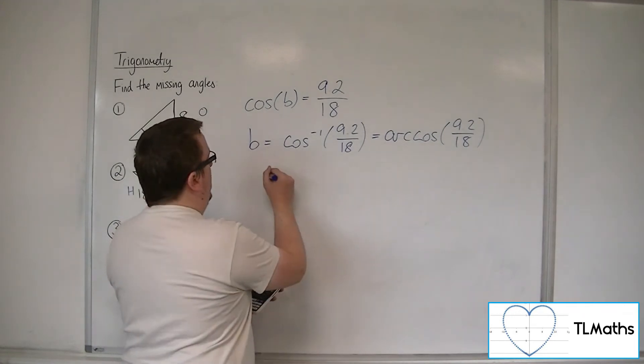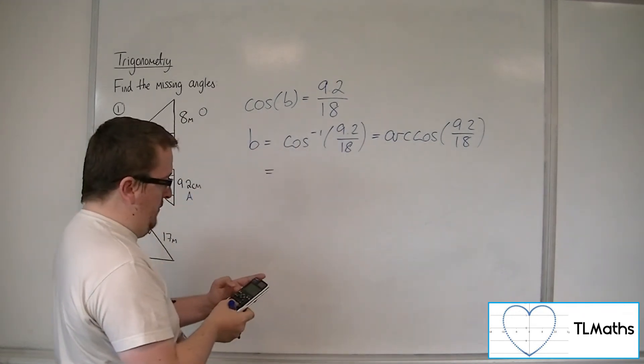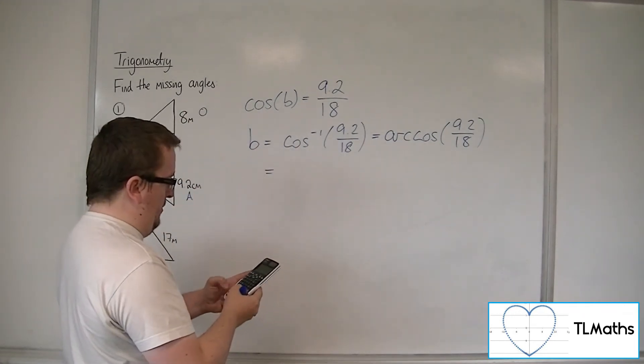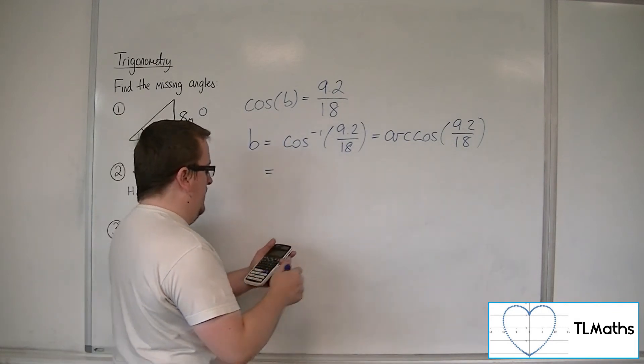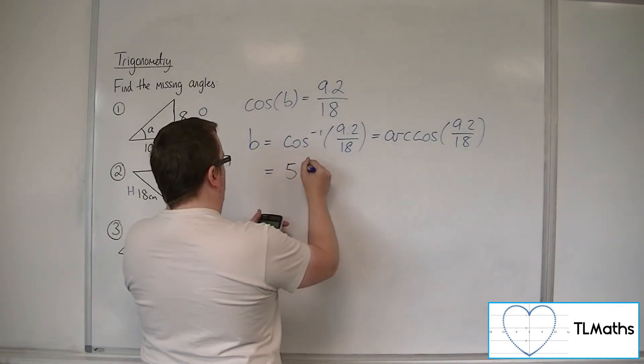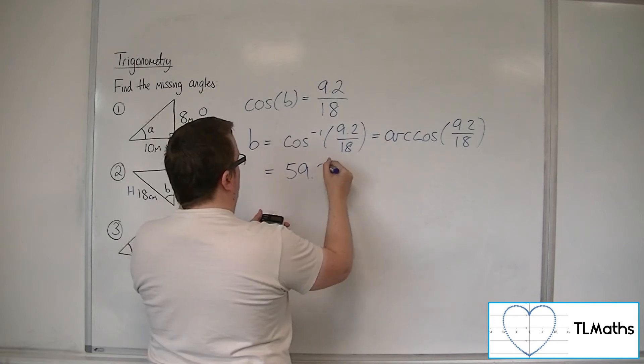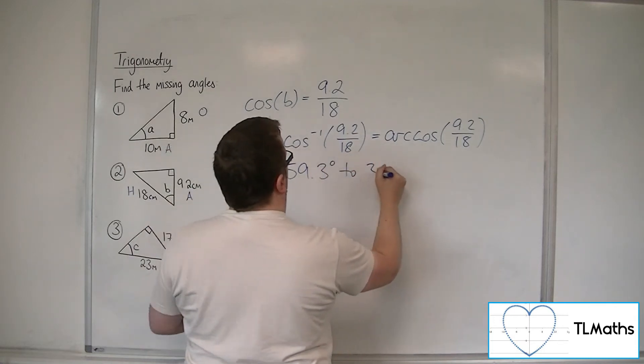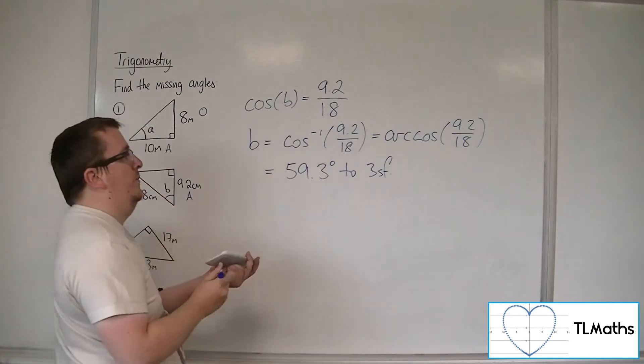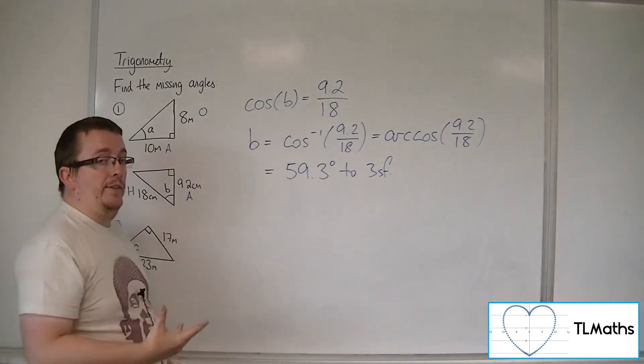So B is equal to the inverse cosine of 9.2 divided by 18, which is 59.2621, etc. So 59.3 degrees to 3 significant figures. And that's number 2.